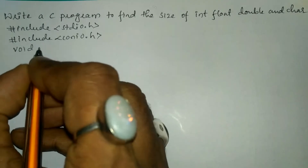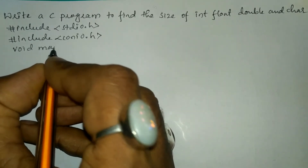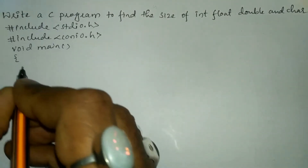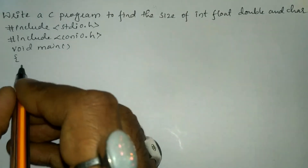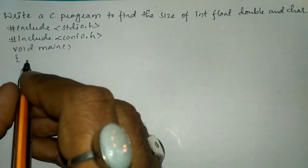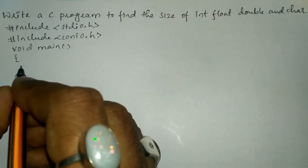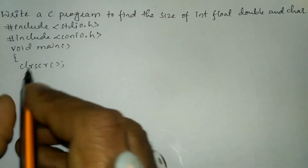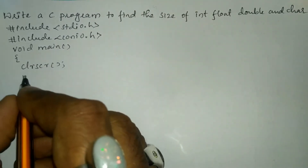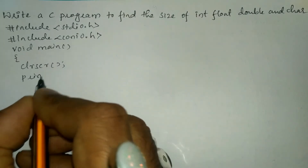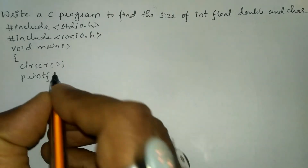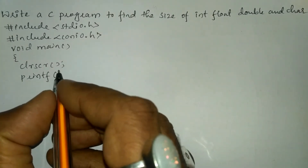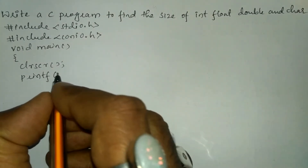Write the main function with a curly open brace, and here I am going to write the clrscr function. Now I am going to print the size of the particular data types.